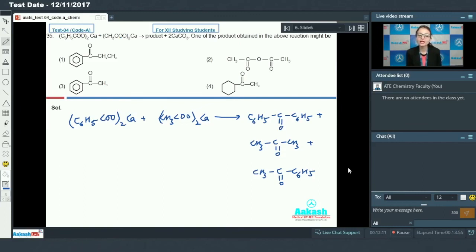The first option is ethyl phenyl ketone. In this reaction we don't get ethyl phenyl ketone, so this is not the answer. Second is anhydride, this is also incorrect. Third is methyl phenyl ether, this is correct. Fourth is cyclohexyl methyl ketone, this is also incorrect. So answer is third.